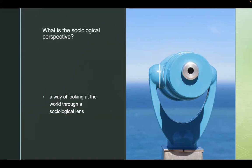There are multiple perspectives in how to view society. Therefore, we often need tons of theories. For the purpose of this lecture, we're just going to focus on the big three: functionalism, conflict theory, and symbolic interactionism.